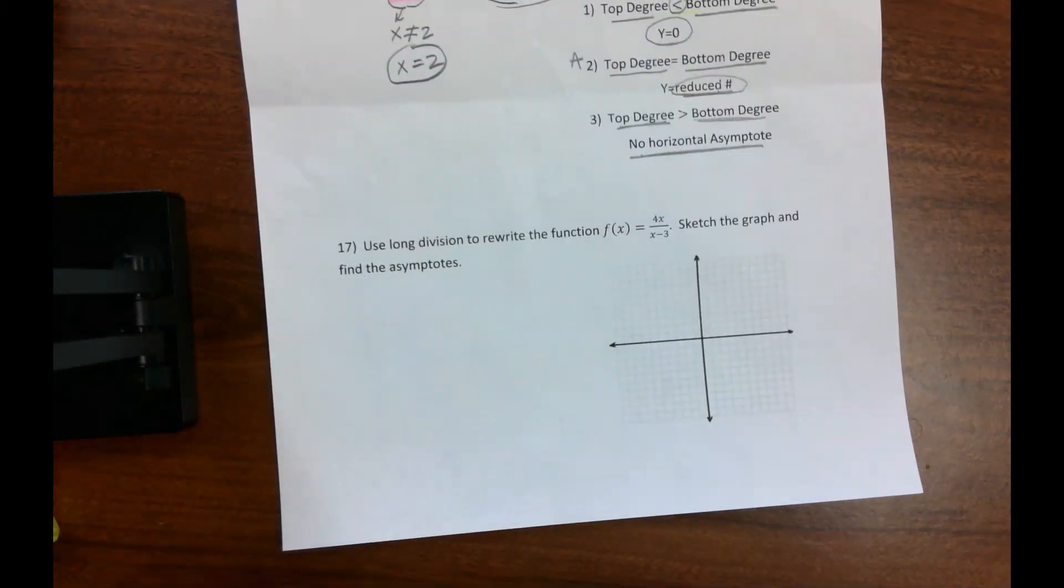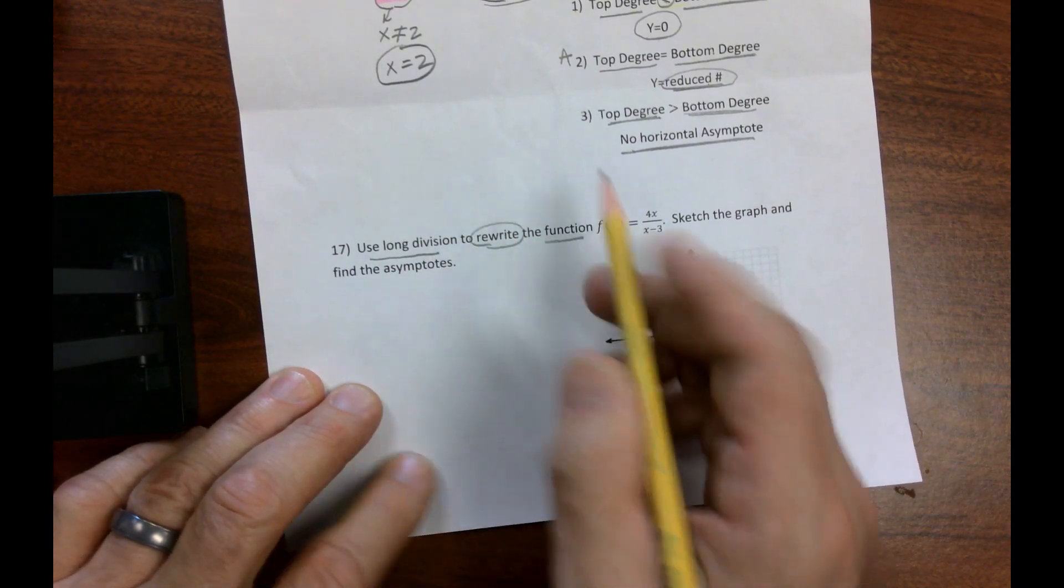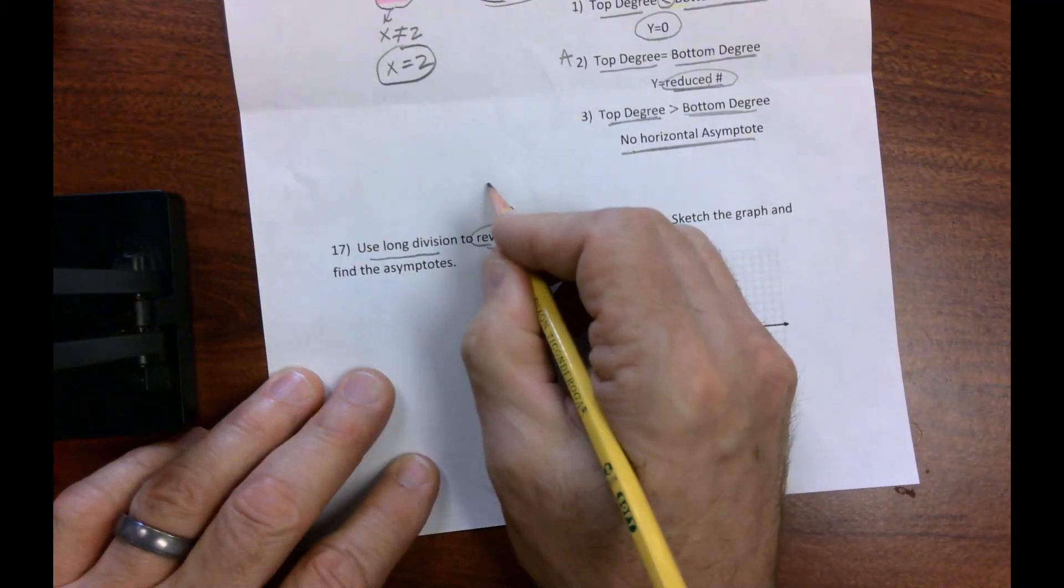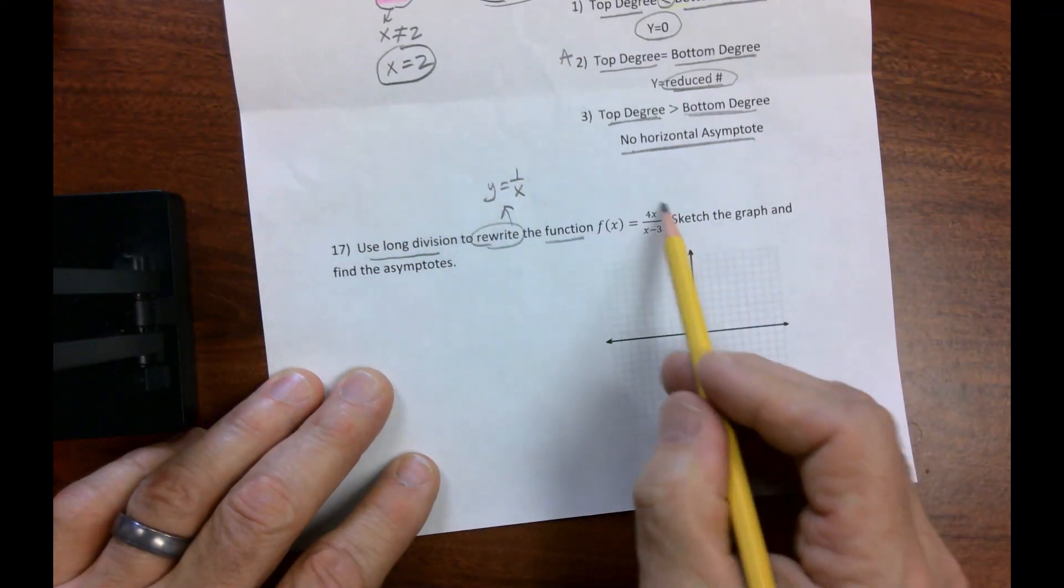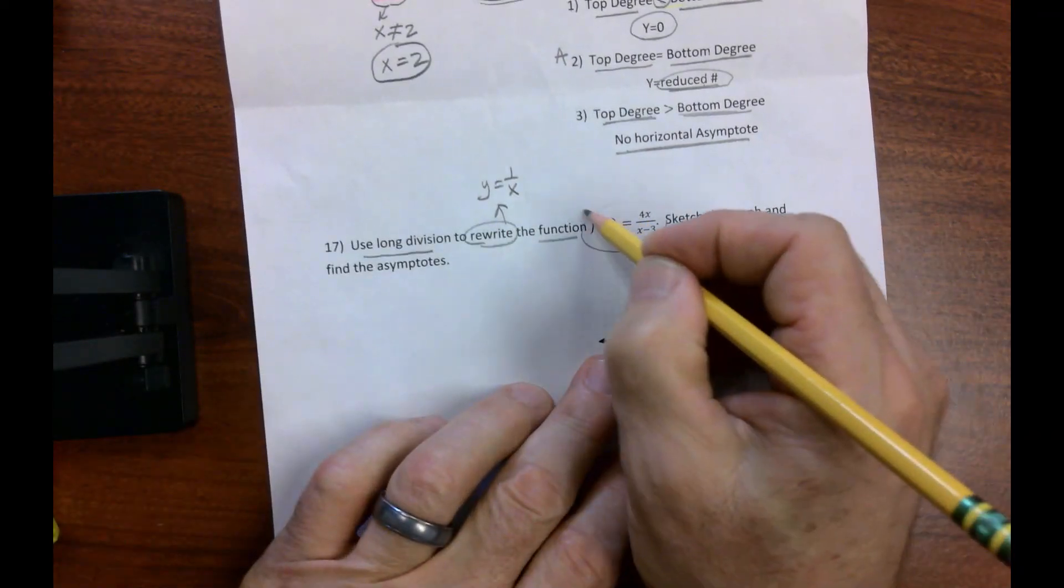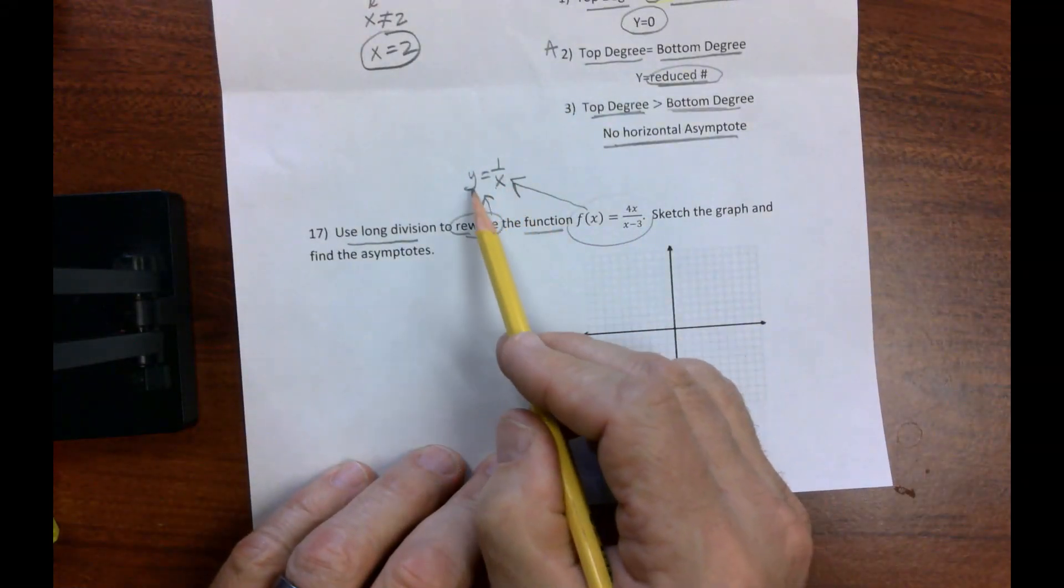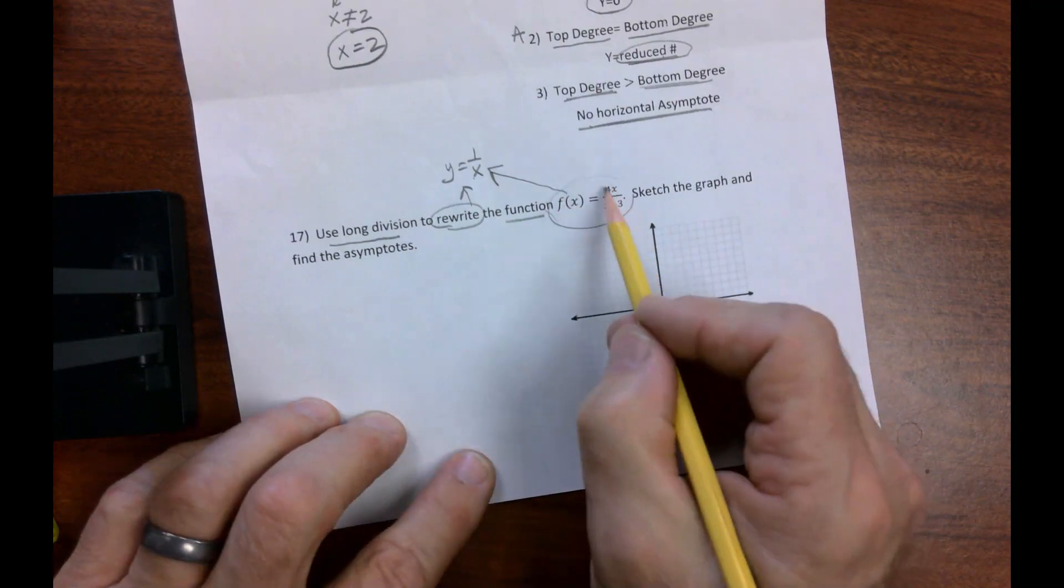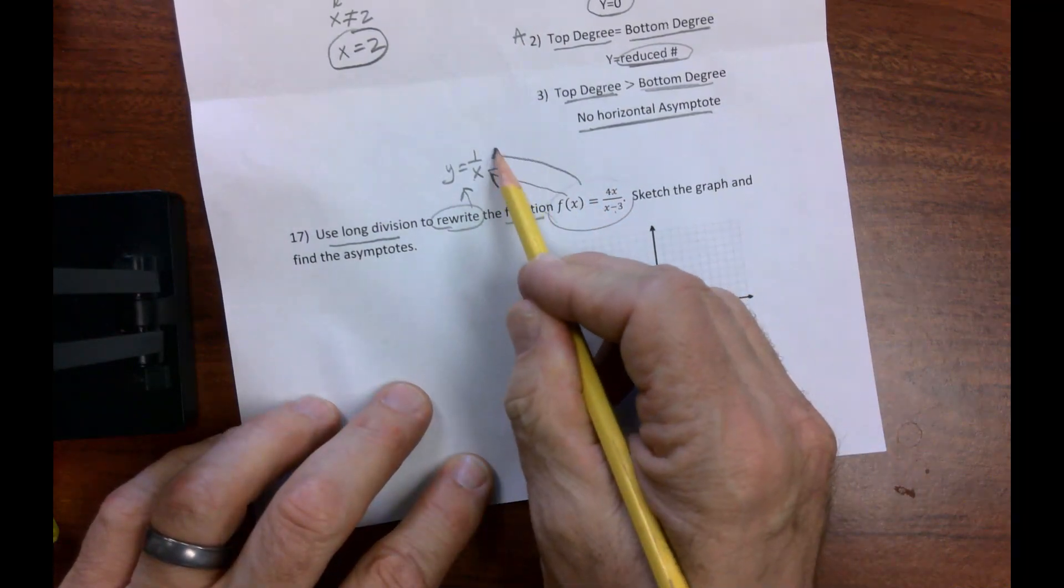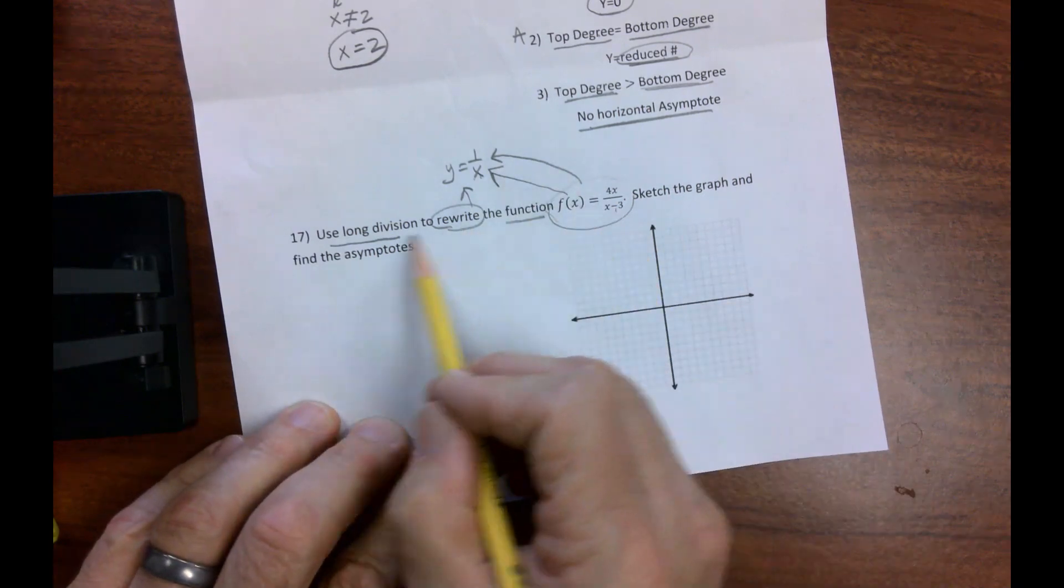Number 17, a little weird here, but it says use long division to rewrite the function. Now, after doing a whole bunch of these, I hope you guys know, this is a problem designed to get you back to your understanding of this parent function. So, let's go to this. And this, the instructions are just trying to help you understand you're trying to relate this to this. So, use long division.